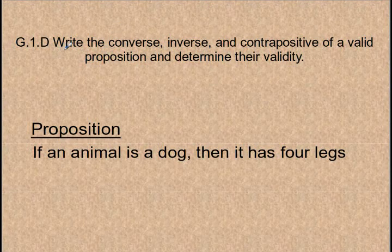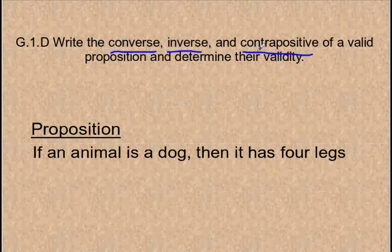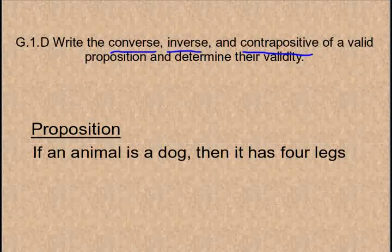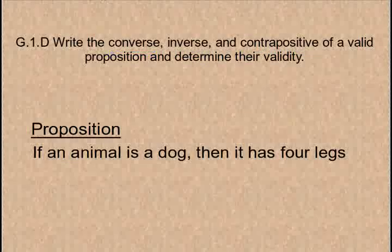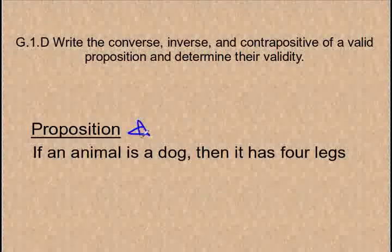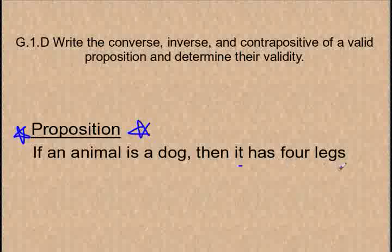Write the converse, inverse, and contrapositive of a valid proposition and determine their validity. I've started with this proposition here: If an animal is a dog, then it has four legs.